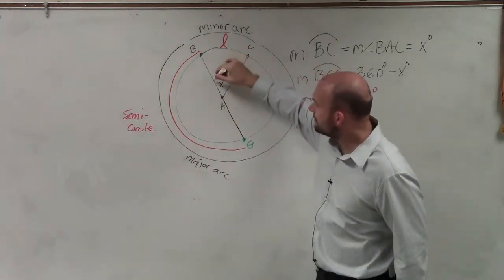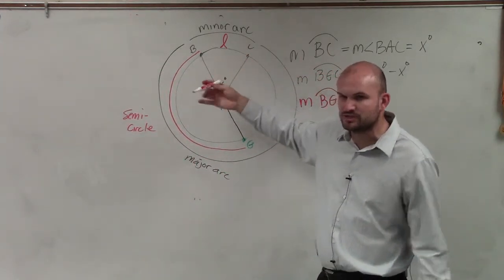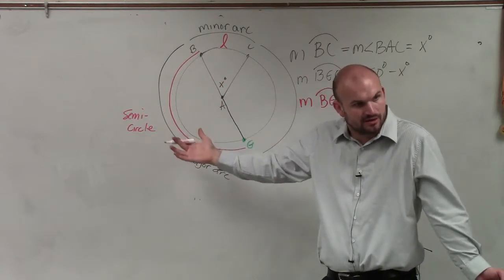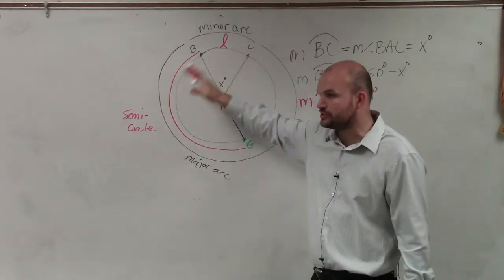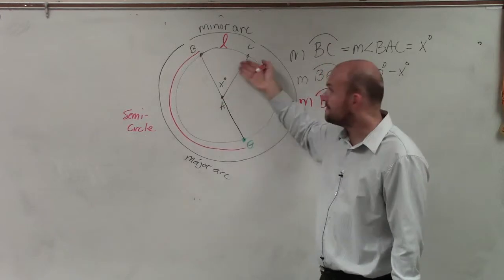One is the measurement of the rotation of your two radii, which is in angles, which is in degrees. Right? How far do these two radii rotate from one another? That's in degrees.